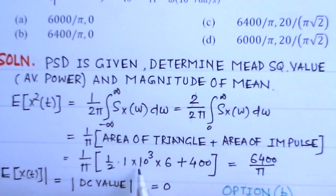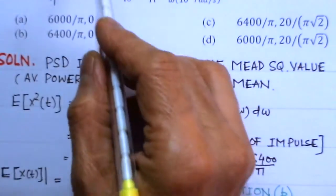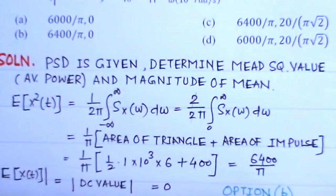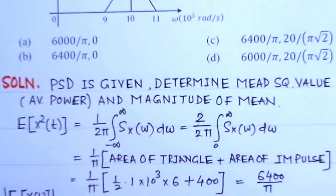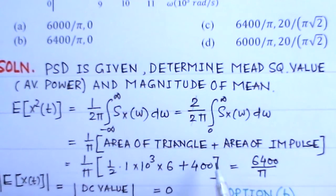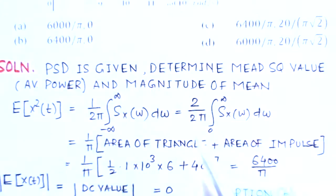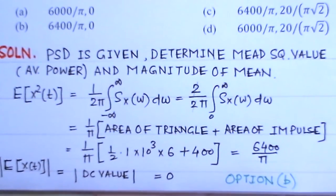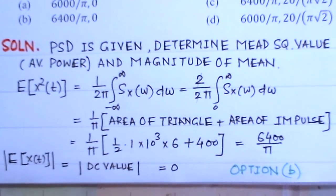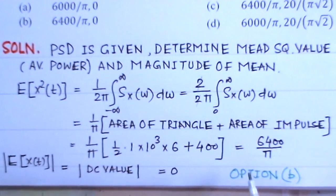We calculate the area: (1/π)[½ × base × height plus area of impulse]. This is 1 kilohertz base, height of 6, so half base into height plus area of the impulse which is 400. If we simplify this we get 6400/π, which is the average power.